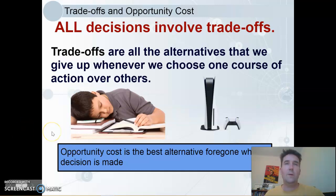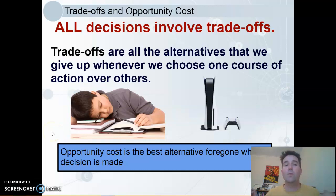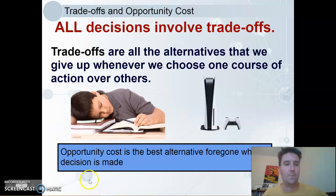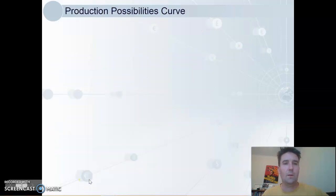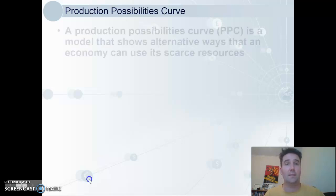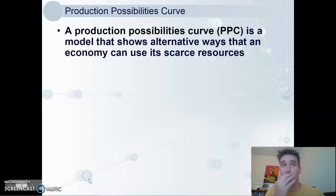We'd say that every choice has a cost because things are scarce — we cannot have everything, we need to make decisions. Economists love to work with models, so we're going to look at our first economic model now, and that is the production possibilities curve.